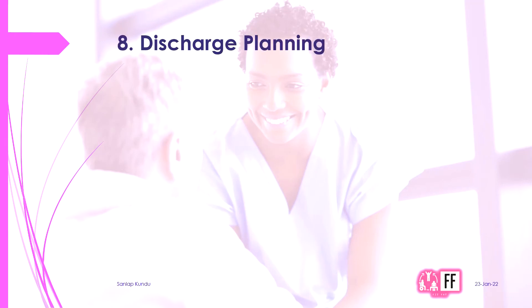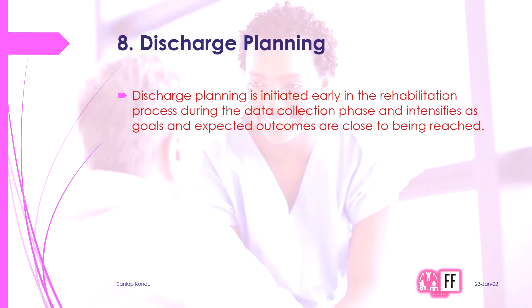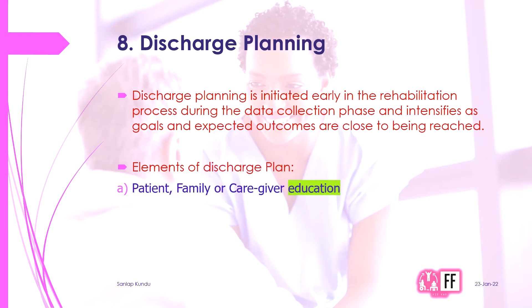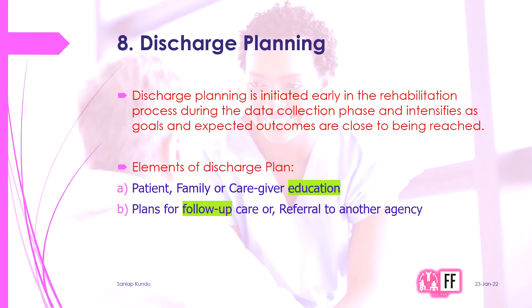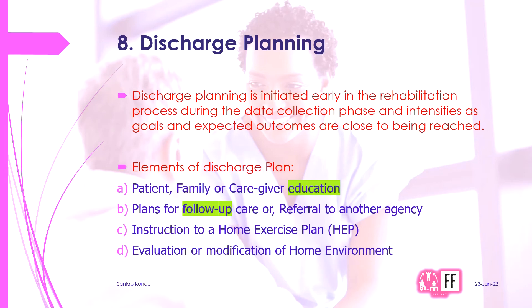After achieving the goal, you need to discharge the patient. The discharge plan is initiated early in the rehabilitation process during the data collection phase and intensifies as goals and expected outcomes are close to being reached. Elements of a discharge plan include patient, family, or caregiver education; plans for follow-up; referral to other agencies; instructions for a home exercise plan; and evaluation or modification of the home environment depending on the patient's condition.